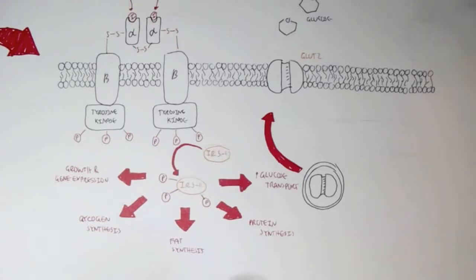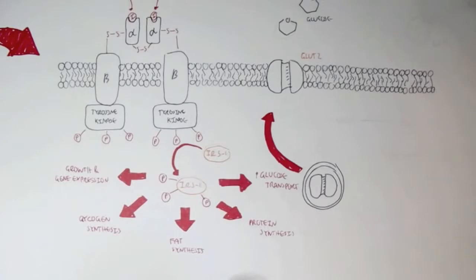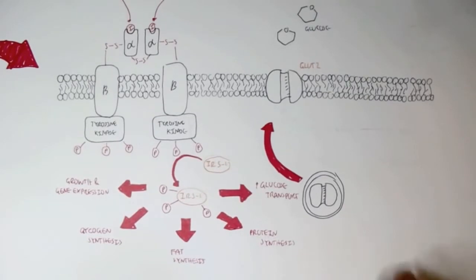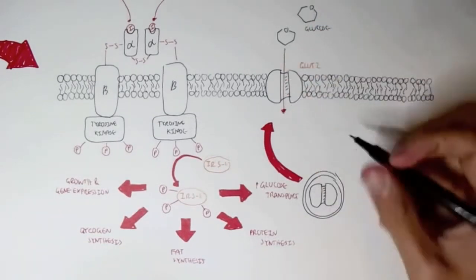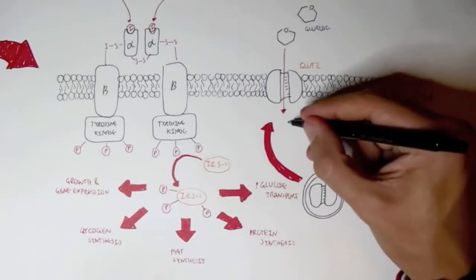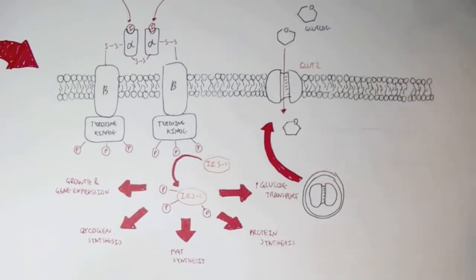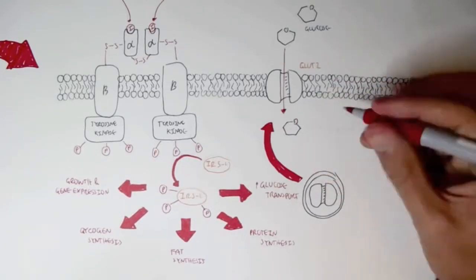Therefore, glucose just accumulates in the bloodstream, increasing blood glucose levels. The liver, as mentioned, expresses specifically type 2 GLUT transporters. Other organs have different GLUT transporters — for example, muscle has GLUT4. The increased expression of GLUT2 transporters increases the absorption of glucose from the bloodstream into the liver.